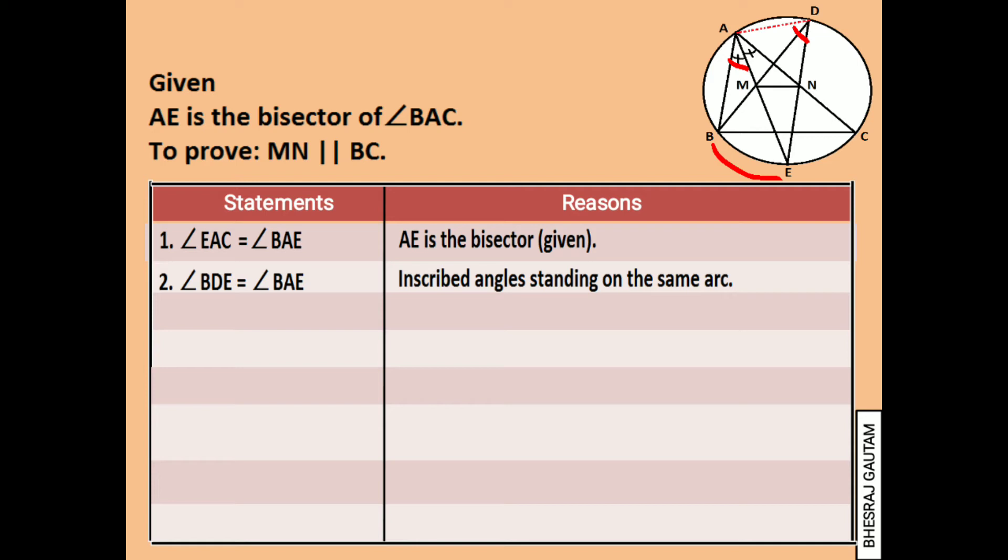From statements 1 and 2 we can now write angle EAC is equal to angle BDE. Carefully observing the figure, angle MAN is same as angle EAC and angle MDN is same as angle BDE. Keep this in mind. So statement 4 can be concluded as AMND is a cyclic quadrilateral where angle MAN and angle MDN are same to be inscribed angle. This is the conclusion made from statement 3.